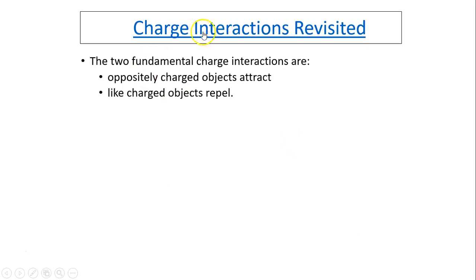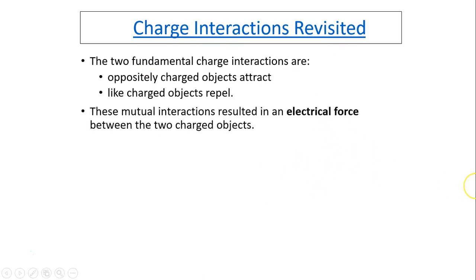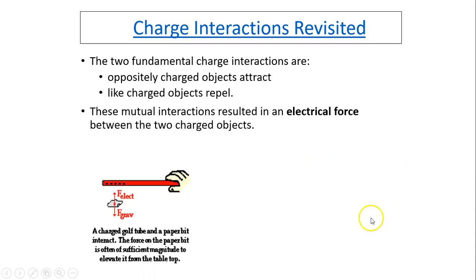The charge interaction revisited. Two fundamental charge interactions are: opposite charges attract, and like charges repel. These fundamental interactions result in an electrostatic force between two charged objects. Here is an example of a charged tube levitating a piece of foil. On the foil there are an electric force and a gravity force, so when the two forces balance, the foil can float.